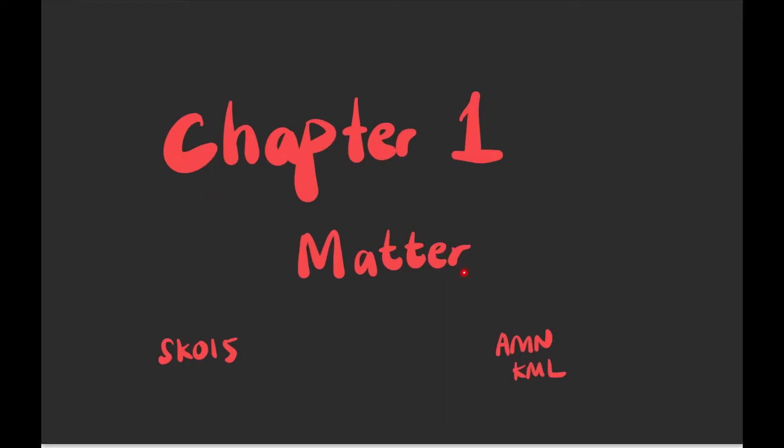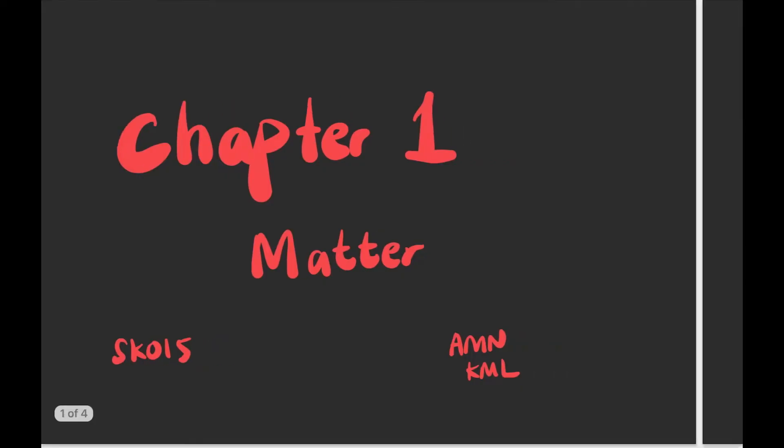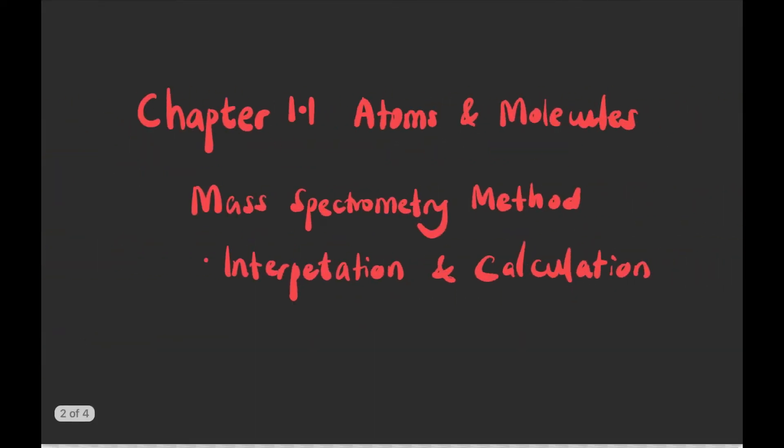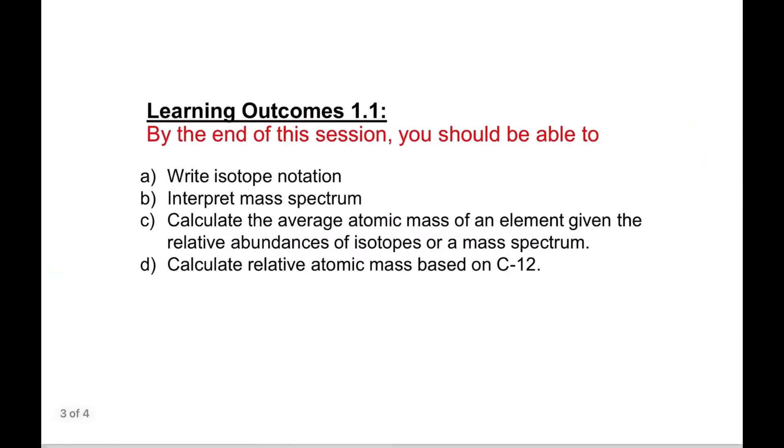Hi guys, welcome back to the channel. This is chapter 1 for STPM Chemistry SK015. In this video we're going to cover chapter 1.1, atoms and molecules, specifically on mass spectrometry method. By the end of this lesson you should be able to interpret mass spectrum and calculate the average mass of an element given the relative abundance of isotopes and mass spectrum.